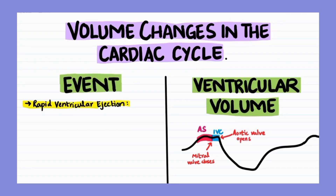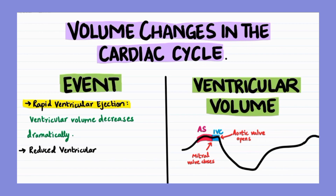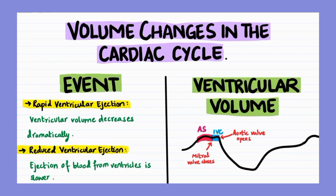The phase of ejection comprises rapid and reduced ventricular ejection. During rapid ejection, the ventricular volume decreases dramatically, whereas during the reduced ejection phase, the ejection of blood from the ventricles is slower. The ejection phase is represented by the area highlighted in green on the graph, and the aortic valve opens just before the ejection phase starts.